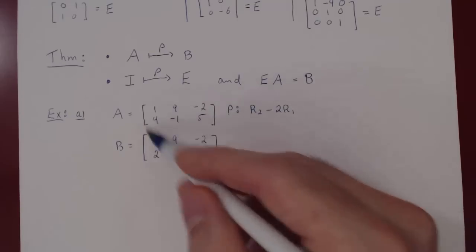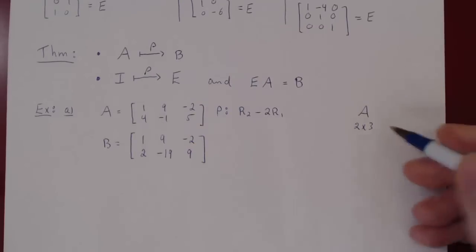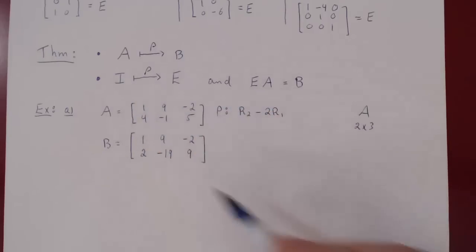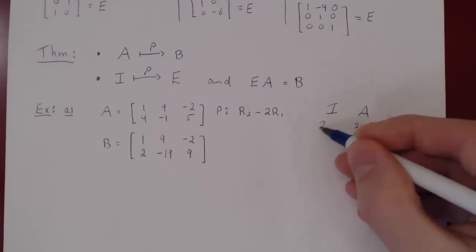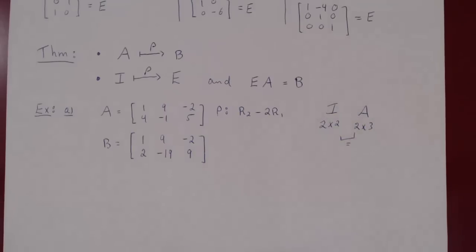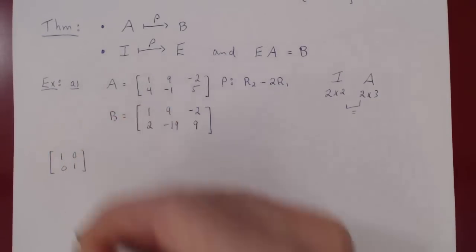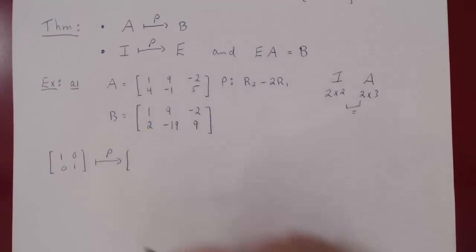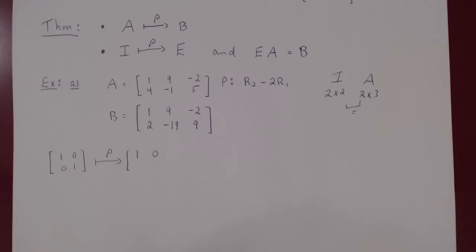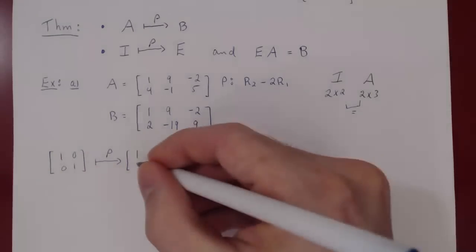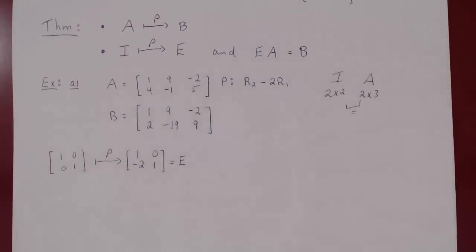Now let's construct the elementary matrix instead of applying the row operation directly to A. Since A is 2×3, for the multiplication EA to be defined, I must be the 2×2 identity matrix. Starting with I = [1, 0; 0, 1], we apply row 2 minus 2 times row 1. Row 1 stays the same. Row 2 becomes [0 - 2·1, 1 - 2·0] = [-2, 1]. So E = [1, 0; -2, 1].